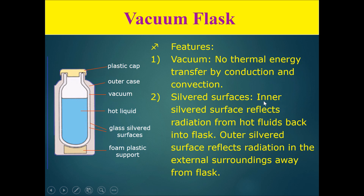The next feature is the silvered surface. The inner silvered surface reflects radiation from hot fluids back into the flask, and the outer silvered surface reflects radiation from the external surroundings away from the flask. Therefore, this serves to minimize radiation absorption or radiation emission.